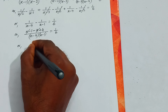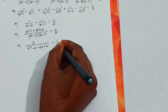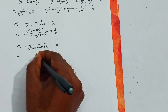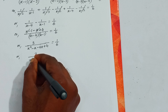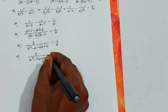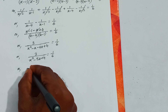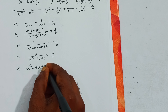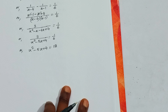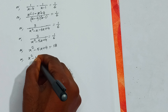We break each term: 1/(x-2) minus 1/(x-1), and similarly for the next term — 1/(x-3) minus 1/(x-2), plus 1/(x-4) minus 1/(x-3), equals 1/6.